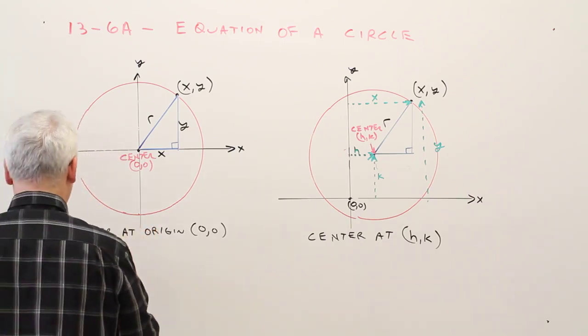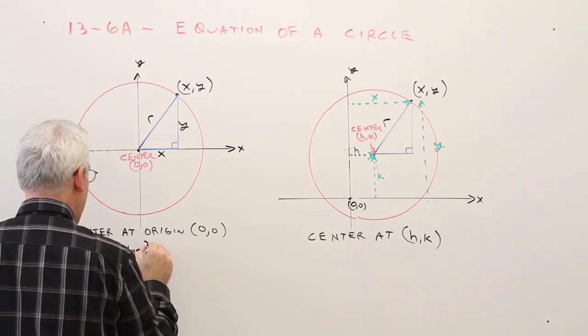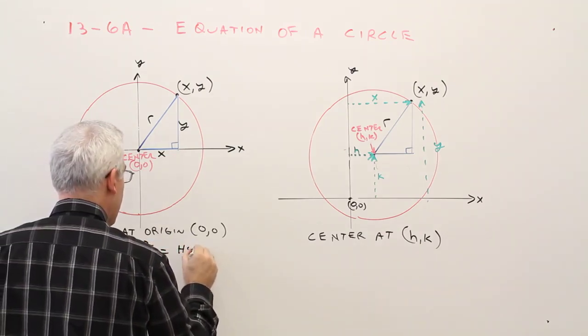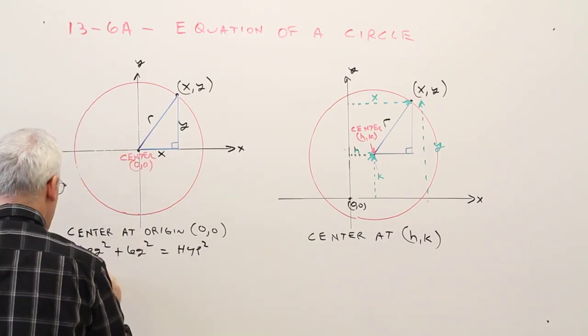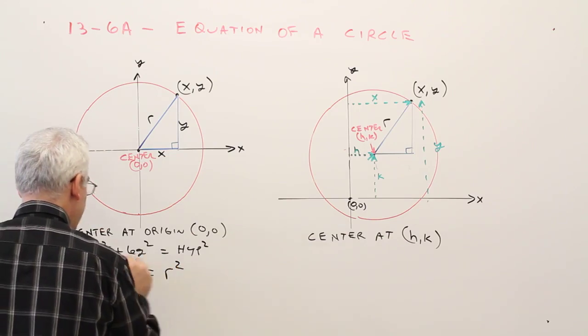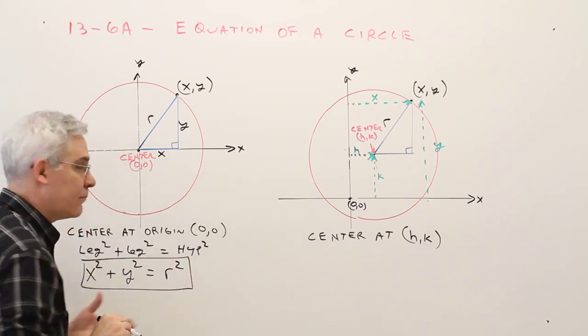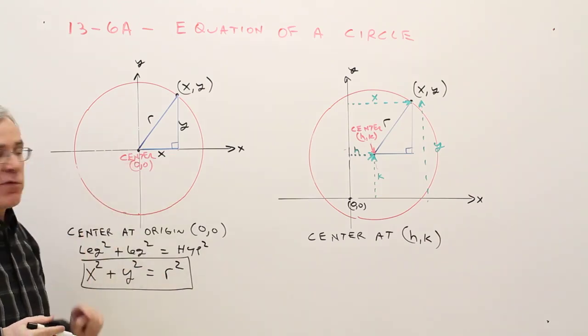I now have the Pythagorean theorem. Leg squared plus leg squared equals hypotenuse squared, or x squared plus y squared equals r squared. That's the equation of a circle when the center is at the origin.